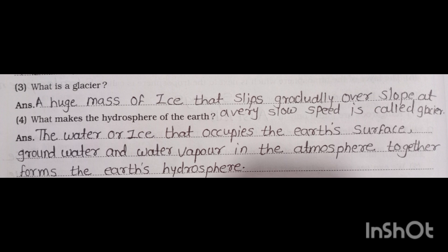Third, what is a glacier? A huge mass of ice that slips gradually over a slope at a very slow speed is called a glacier.